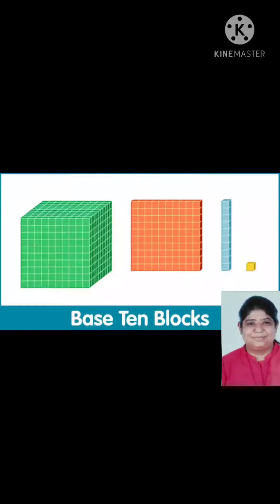As we can see, one yellow block is there, one blue block is there, one orange block is there, and one green block is there. One yellow block represents ones, one blue block represents tens, one orange block represents hundreds, and one green block represents thousands. So what will be the answer? 1111.